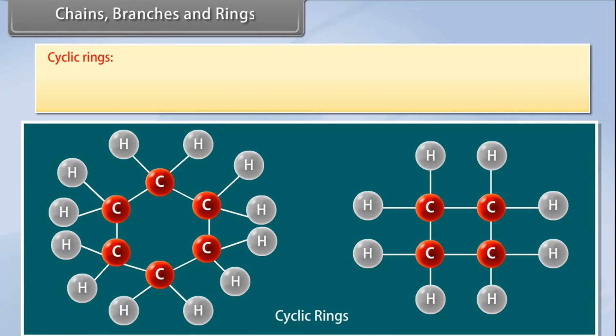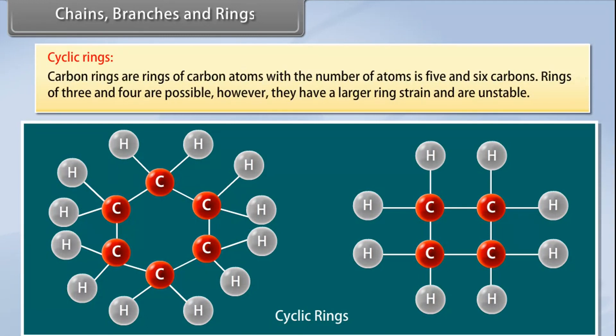Cyclic rings: Carbon rings are rings of carbon atoms. The number of atoms to form a ring is five and six carbons. Rings of three and four are possible.